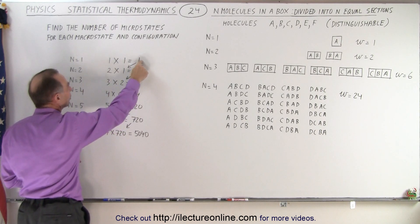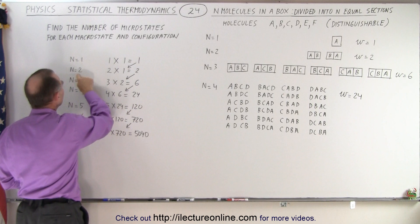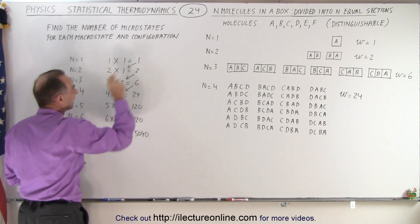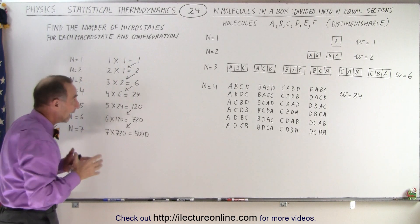For the second case, we take the 1 and bring it over here. n equals 2 goes over here. 2 times 1 equals 2. Two microstates in the case of two molecules and two partitions.